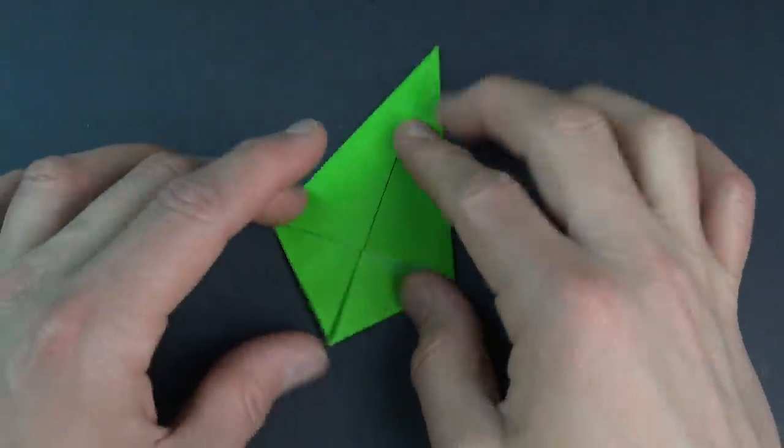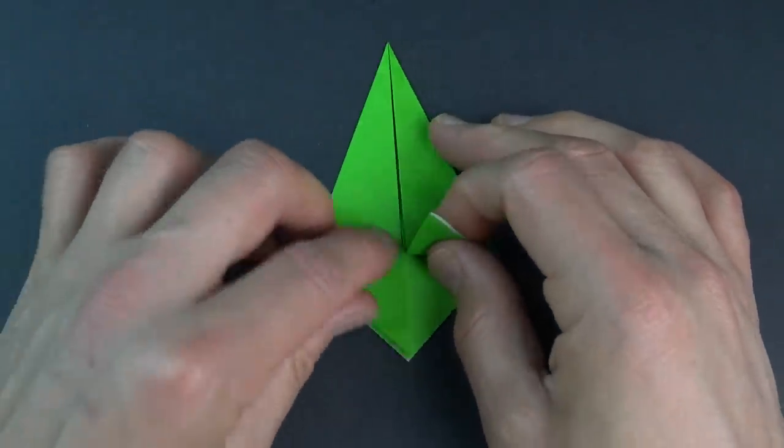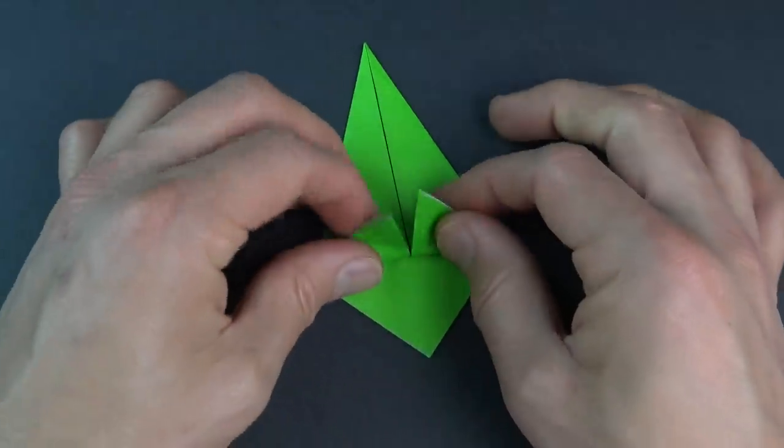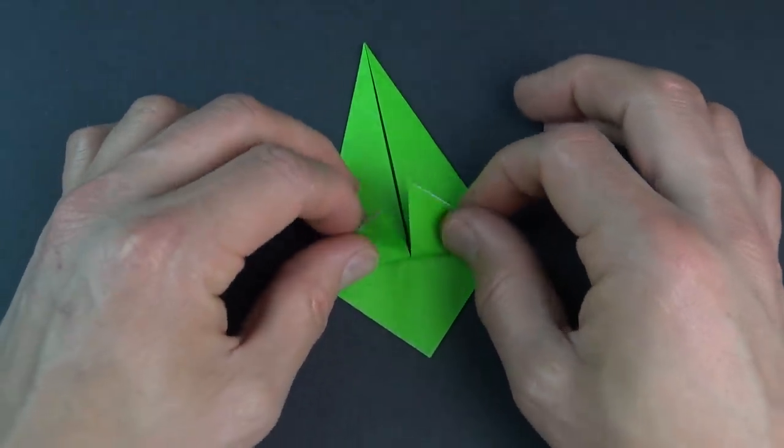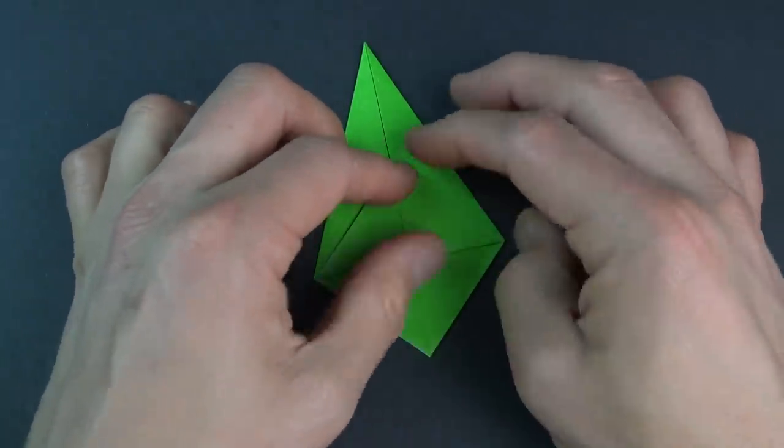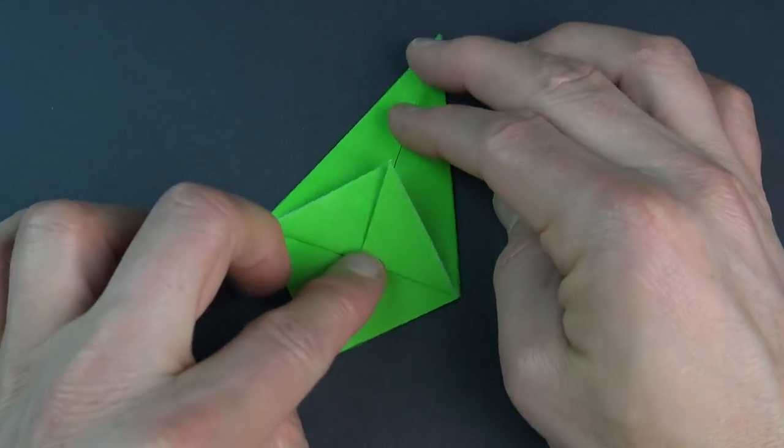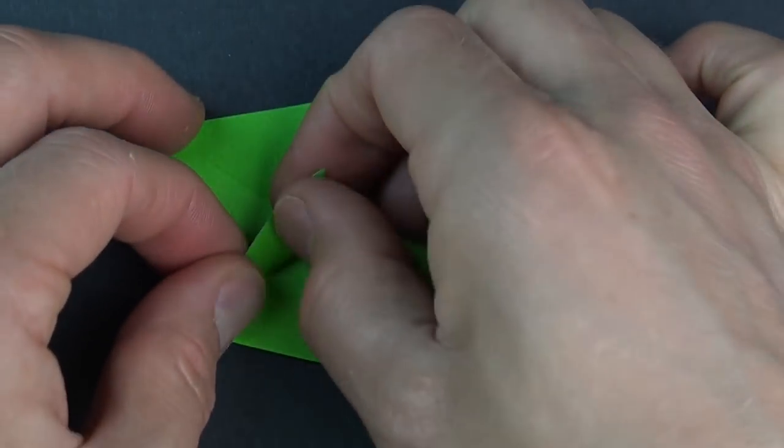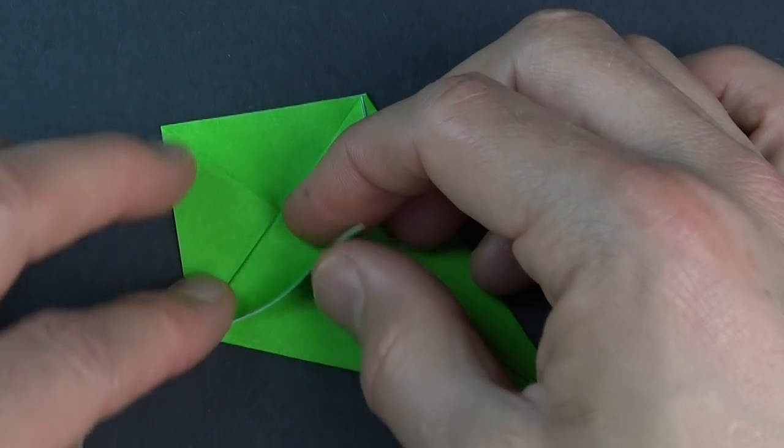And repeat. And rotate. Now fold these two flaps, just the two, over these edges. And rotate. And fold this flap up so that this edge and this edge align.